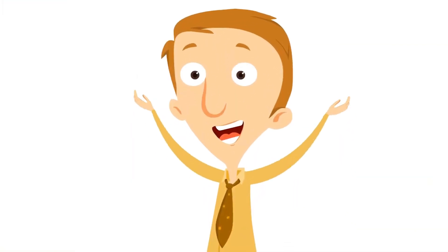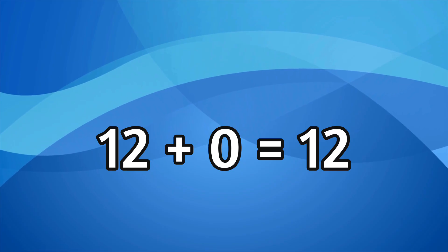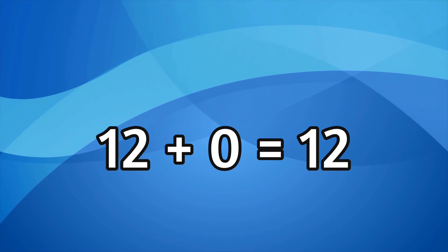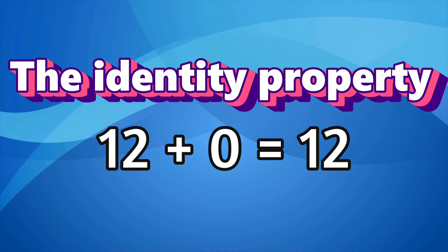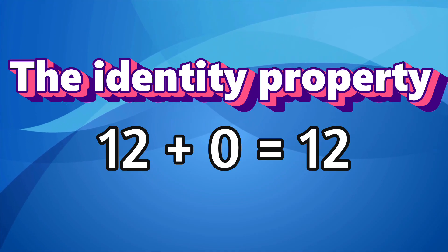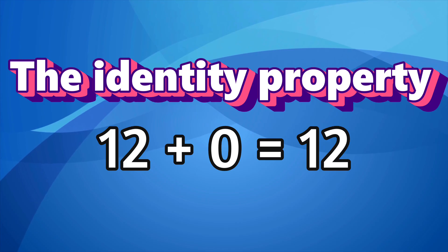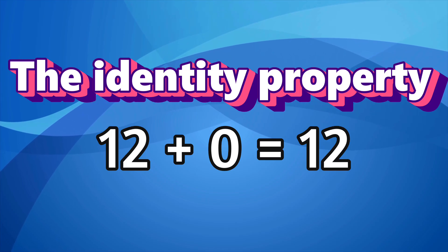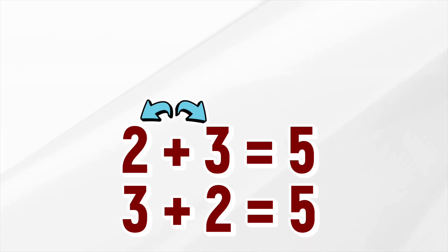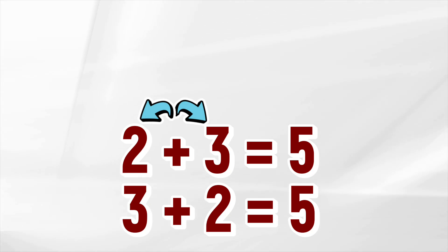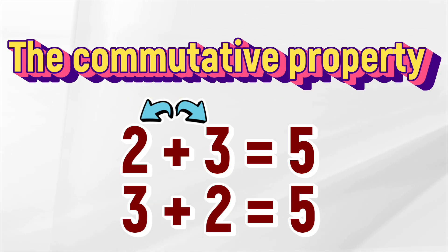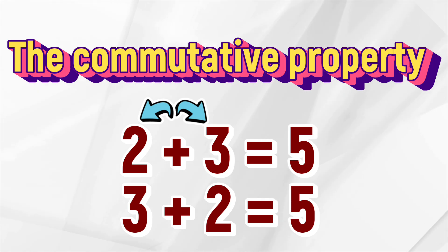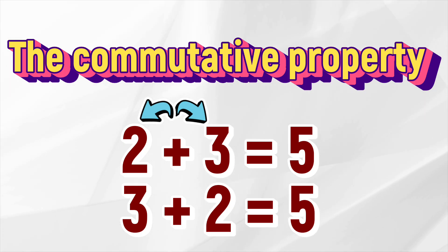How about this one? What property of addition is this? The identity property — you got it! The identity property means that when you add 0 to a number, the answer is that number. Here's the last one. What property of addition is this? The commutative property means that you can add numbers in any order and you'll still get the same answer. Well done!